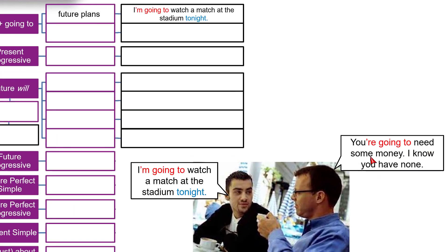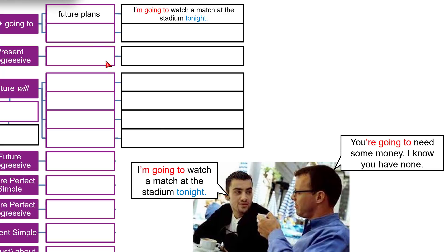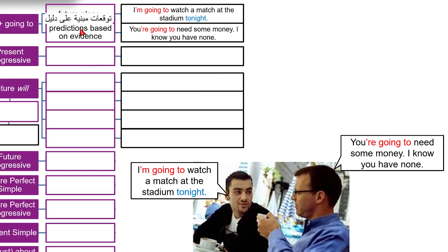"You're going to need some money." We use 'be going to' here, but this time it's not a future plan — it is a prediction based on evidence. This man knows that the other man has no money, so he says "You're going to need" — the verb is 'need'. Predictions based on evidence use 'be going to'.